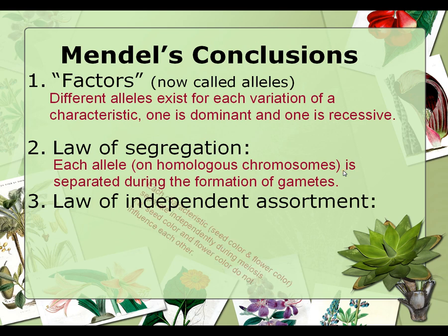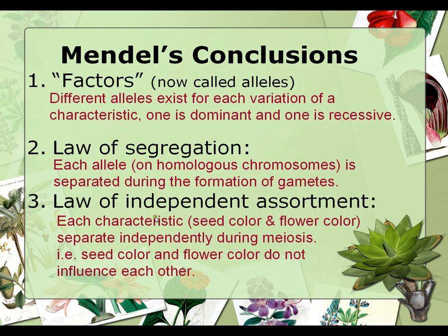The law of independent assortment states that the characteristics themselves, such as seed color and flower color, separate independently during meiosis. In human terms, just because you have blue eyes doesn't mean that you must have blonde hair — those traits are independent of each other. One way to remember this: the law of segregation is talking about the actual alleles, such as brown eyes or blue eyes, while the law of independent assortment is talking about characteristics such as eye color and hair color, which do not depend on each other.